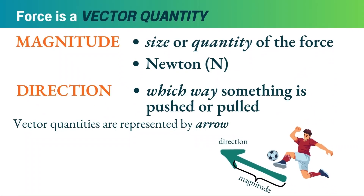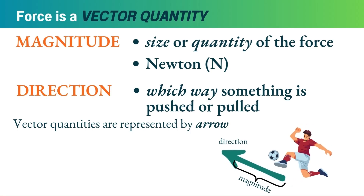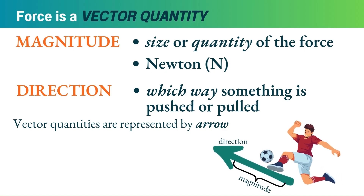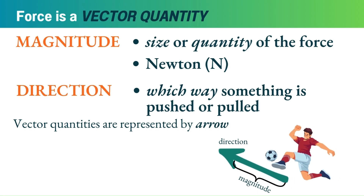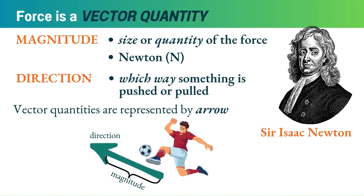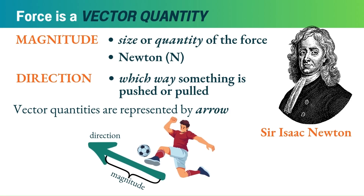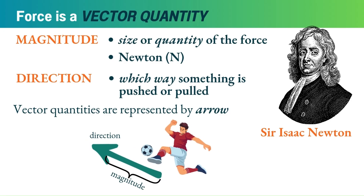Force is a vector quantity because it has magnitude and direction. Magnitude is the size or amount of the force exerted, and it is measured using the unit Newton. N is the symbol for this unit. Just a bit of information — this is in honor of Sir Isaac Newton, who has a lot of contributions in understanding gravity, light, motion, mathematical concepts, and more.